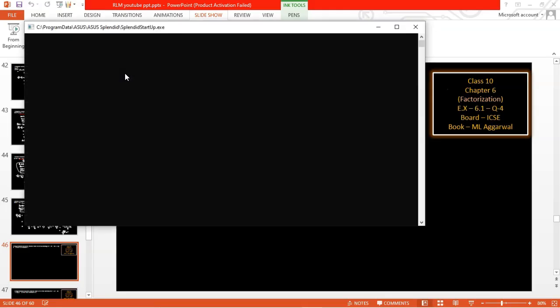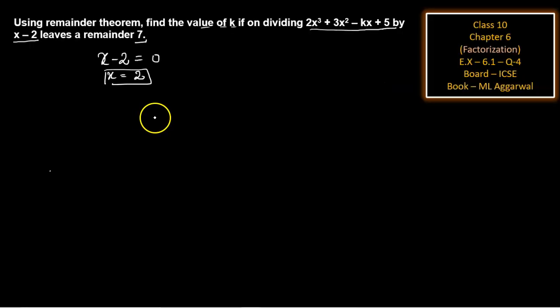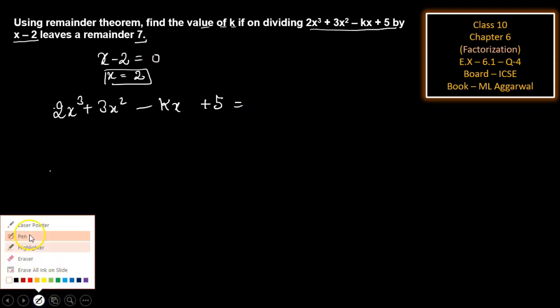Now put the value of x in the given equation. So the equation is 2x³ + 3x² - kx + 5. This is the equation.